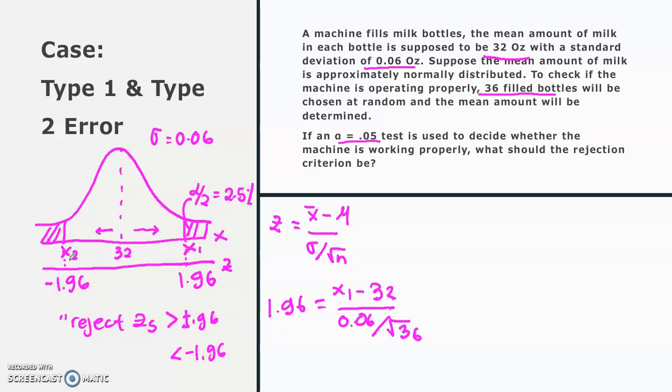For this side, you will just need to insert negative 1.96 equals x2 minus 32 divided by 0.06 root of 36.